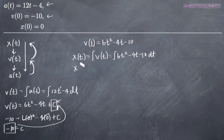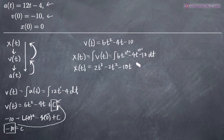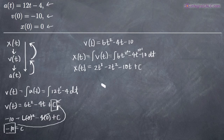To get the position function x(t), we integrate term by term. Adding 1 to the exponent of t²: 2 + 1 = 3, and 6 divided by 3 = 2, giving us 2t³. For -4t: 1 + 1 = 2, and -4 divided by 2 = -2, giving us -2t². Then -10t. We also add C to account for the constant of integration for this indefinite integral.